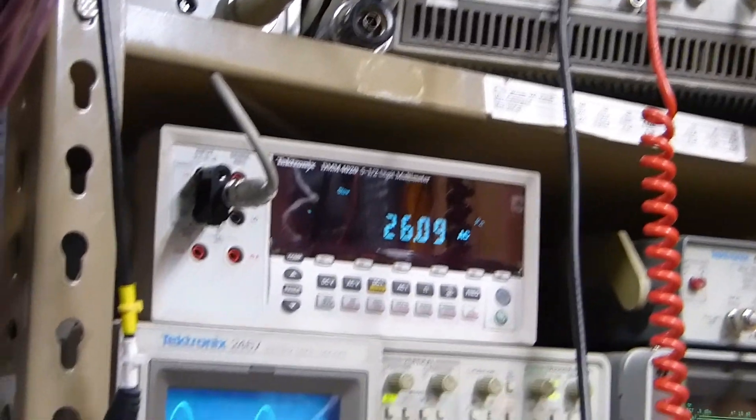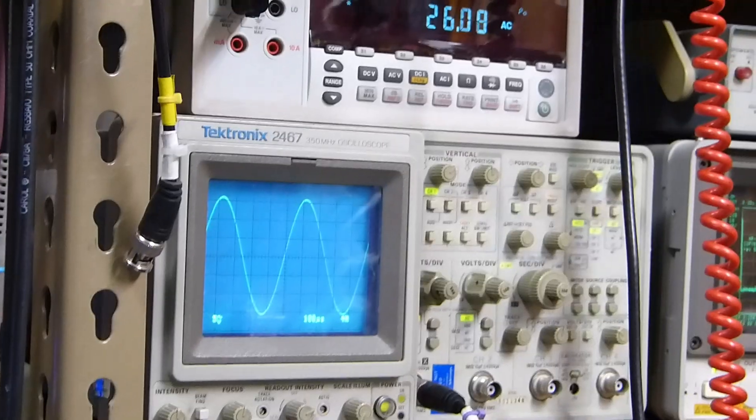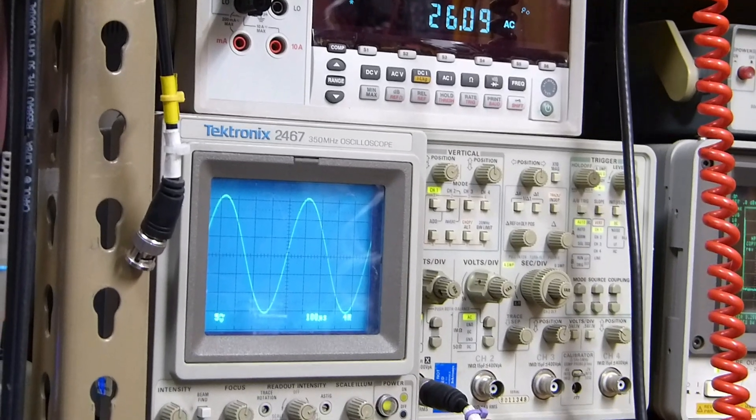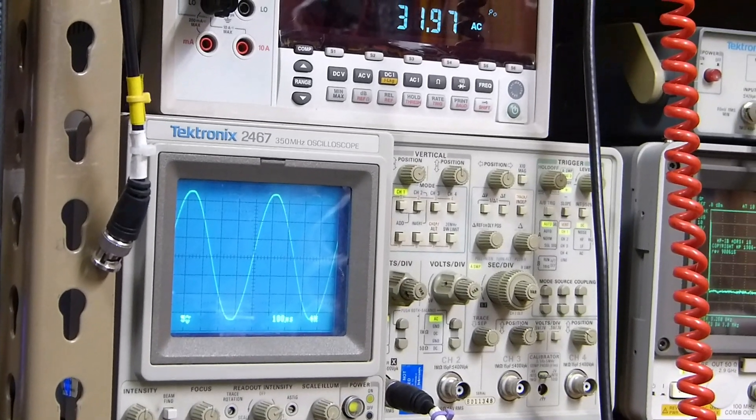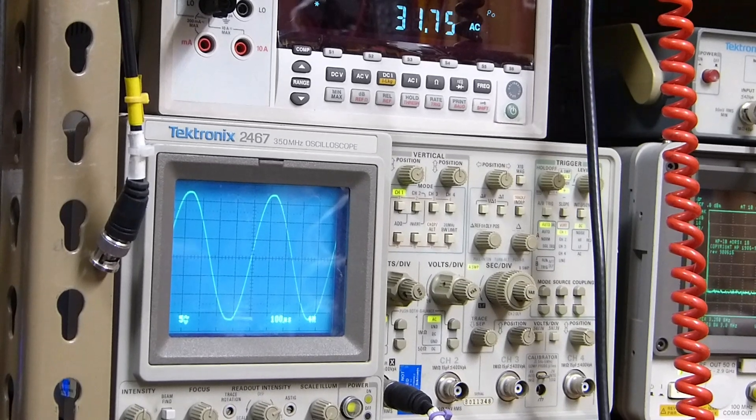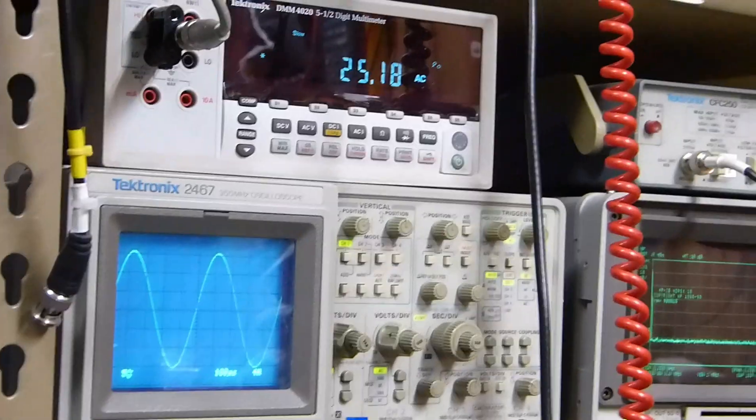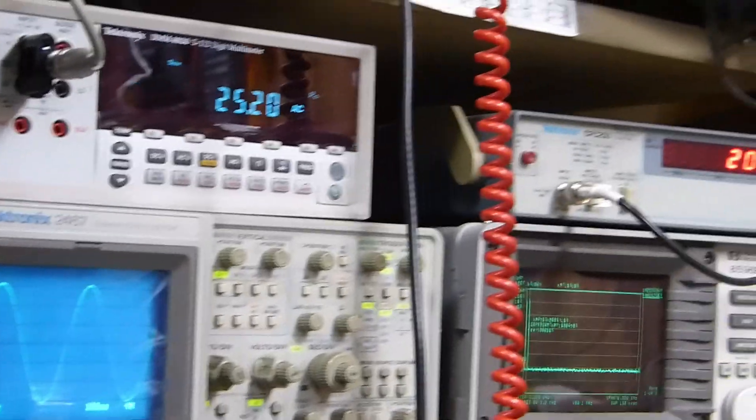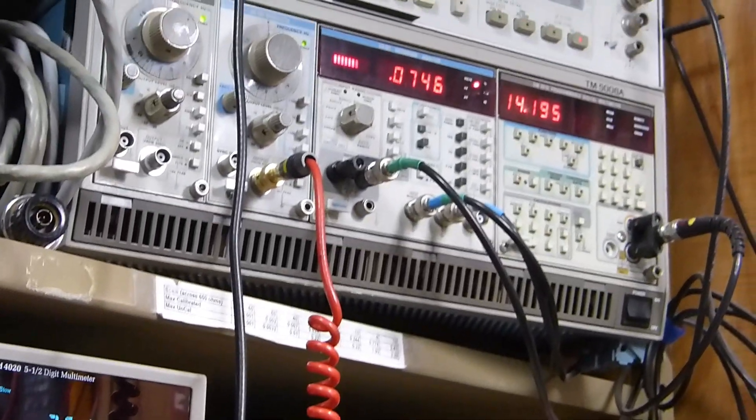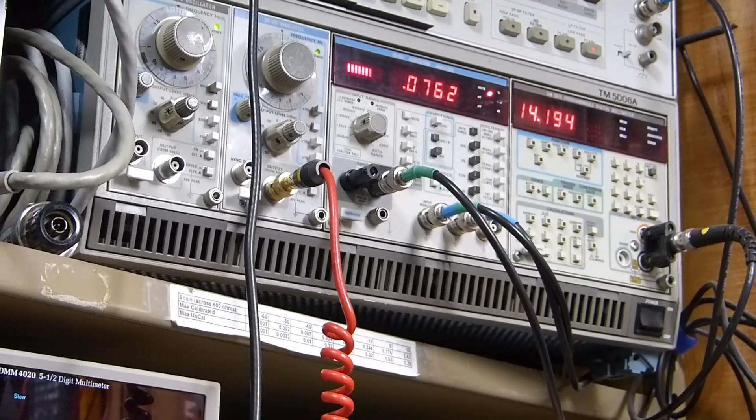We'll change channels here. This is the right channel. I've got it cranked up a little high there, haven't I? Let's turn it back down to 25. There's 25 watts. There's its THD, 0.07. Wow.